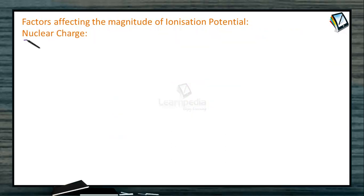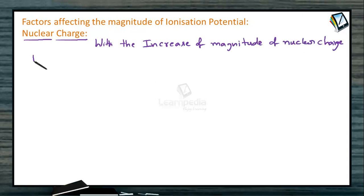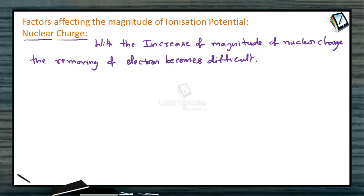The next factor which influences the ionization potential is nuclear charge. Greater the nuclear charge of an atom, the attracting power of the nucleus on the electrons becomes more. When the attracting power is more, the elimination of the electron from the valence shell becomes difficult. When it is difficult, we need to apply more energy. So, with the increase of nuclear charge, the removing of the electron becomes difficult and ionization potential increases.